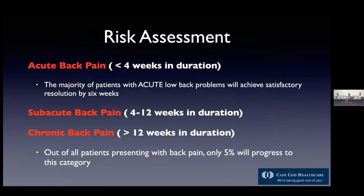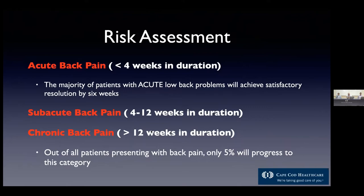Back pain is lumped into three categories: acute back pain — less than four weeks in duration — where most patients will have complete resolution by six weeks with medical management; an intermediate group of four to twelve weeks; and chronic back pain lasting more than twelve weeks. The overwhelming majority of patients with back pain will not progress to chronic back pain. When you have pain it feels like an emergency, but if you can ride it out and go through the treatment algorithms, most people will get better — though the timescale is week to week, not day to day.